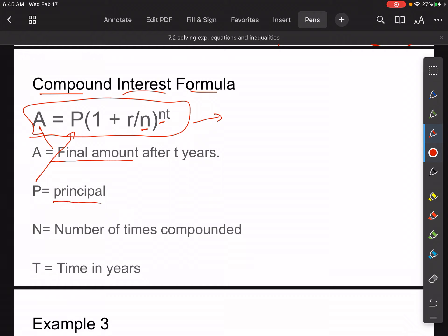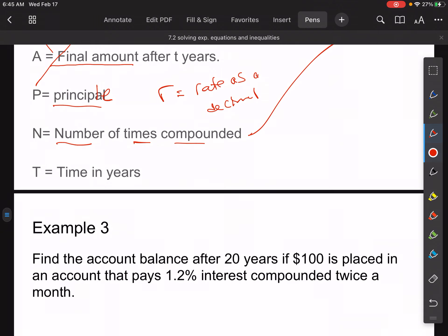And then we have one plus the rate as a decimal. So R stands for rate as a decimal. And then N is the number of times that it compounds in the time period. So it's A equals P times 1 plus R over N, where N is the number of times it compounds in the time frame, all to the N T, where T is time in years. So let's use that on this example 3.